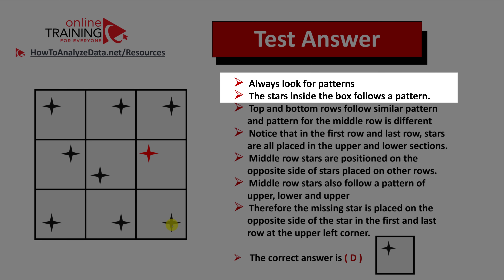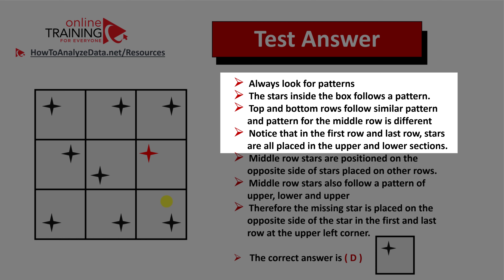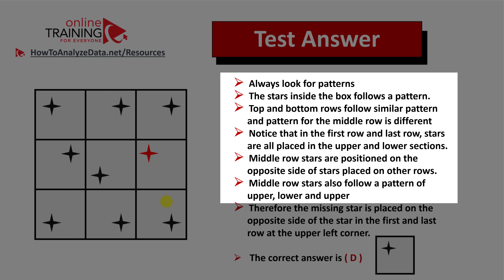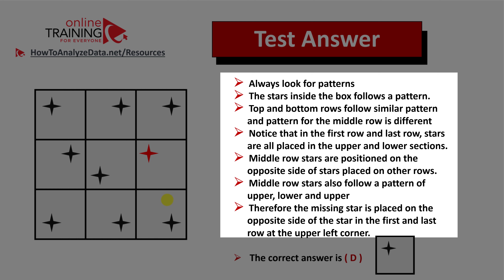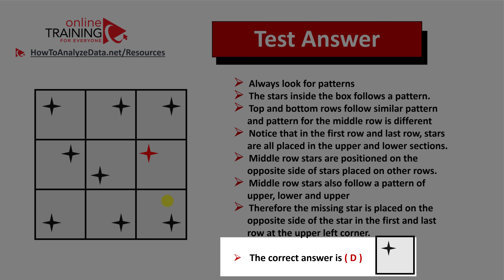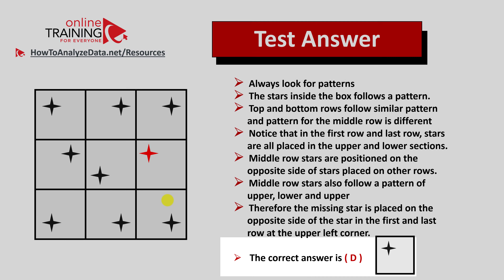Let's recap: always look for patterns. Stars in the top and bottom rows follow similar patterns, while the middle row is very different. The first and last row stars are placed in the upper and left sections. Middle-row stars are positioned on the opposite side, and follow a pattern of upper, lower, then upper again. Therefore, the missing star is placed on the opposite side of the stars in the first and last rows — at the upper left corner. So the correct choice is D.